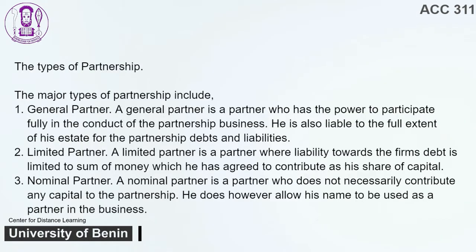The Types of Partnership. The major types of partnership include: 1. General Partner — a partner who has the power to participate fully in the conduct of the partnership business. He is also liable to the full extent of his estate for the partnership debts and liabilities. 2. Limited Partner — a partner whose liability towards the firm's debt is limited to the sum of money which he has agreed to contribute as his share of capital.